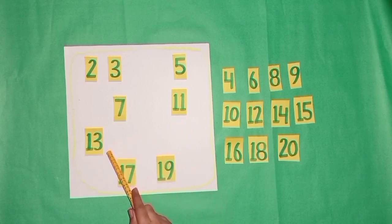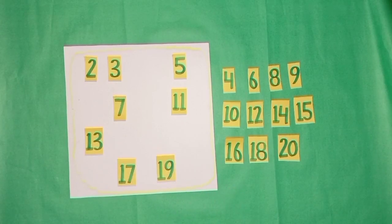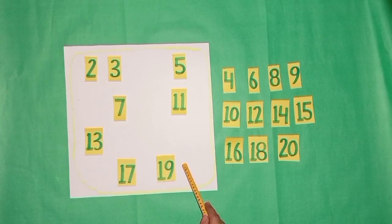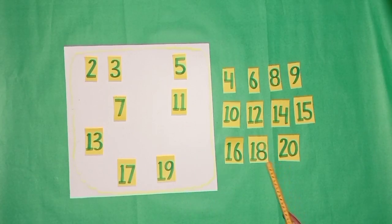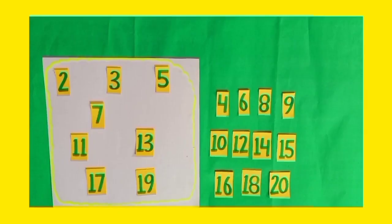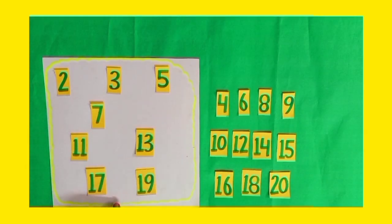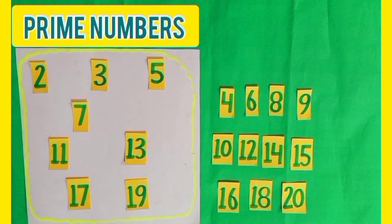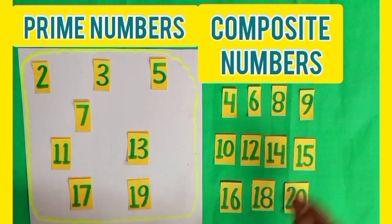We are left with 11, 13, 17, and 19. Dear students, their multiples are greater than 20, so these numbers will remain on the white sheet. So, dear students, on the white side we have all numbers which are prime numbers, and on the green side we have all composite numbers.